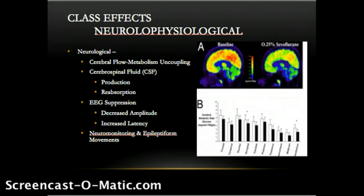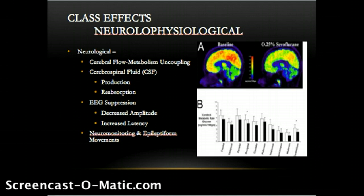Isoflurane does not change CSF production, but may increase or decrease reabsorption depending on dose. At 1-MAC, sevoflurane depresses CSF production by up to 40%. Desflurane at 1-MAC leaves CSF production unchanged or increased.